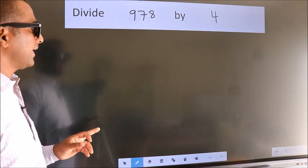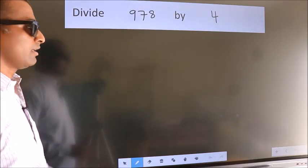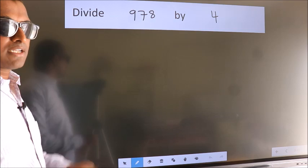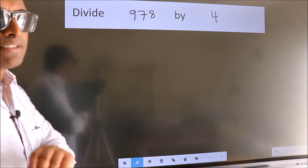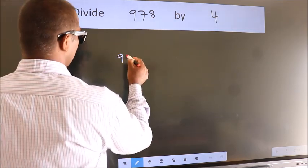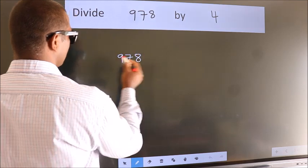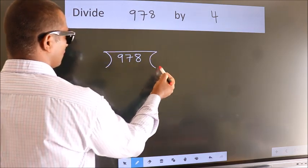Divide 978 by 4. To do this division, we should frame it in this way: 978 here, 4 here.